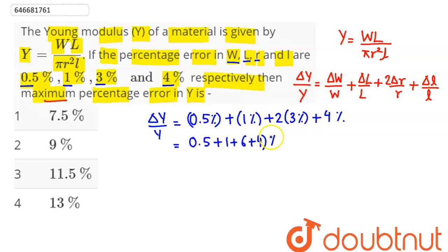Hence this simplifies as 0.5% + 1% + 6% + 4% = 11.5%. So the maximum percentage error in Y is 11.5%. Option 3 is the correct answer.